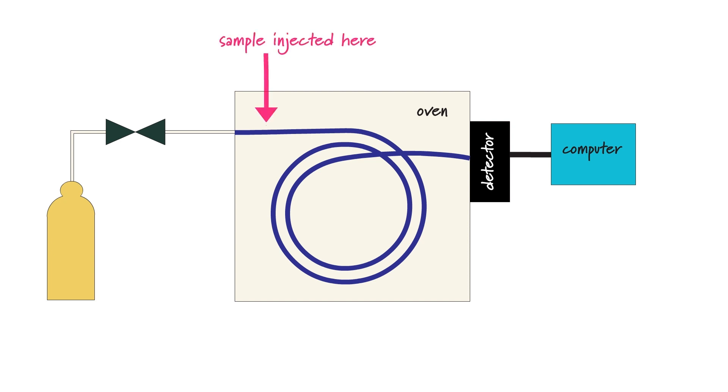It's important that the sample mixture itself is volatile so that it evaporates on injection into the inert carrier gas and it's carried through the column.